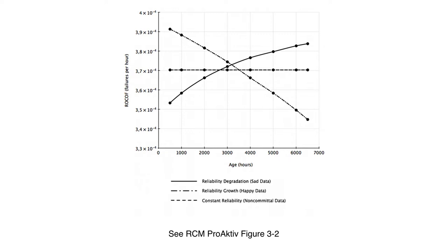The long dotted line shows the case where the ROCOF is decreasing with age. This is also called a happy situation. Most real life systems display reliability degradation — in other words, sad data.